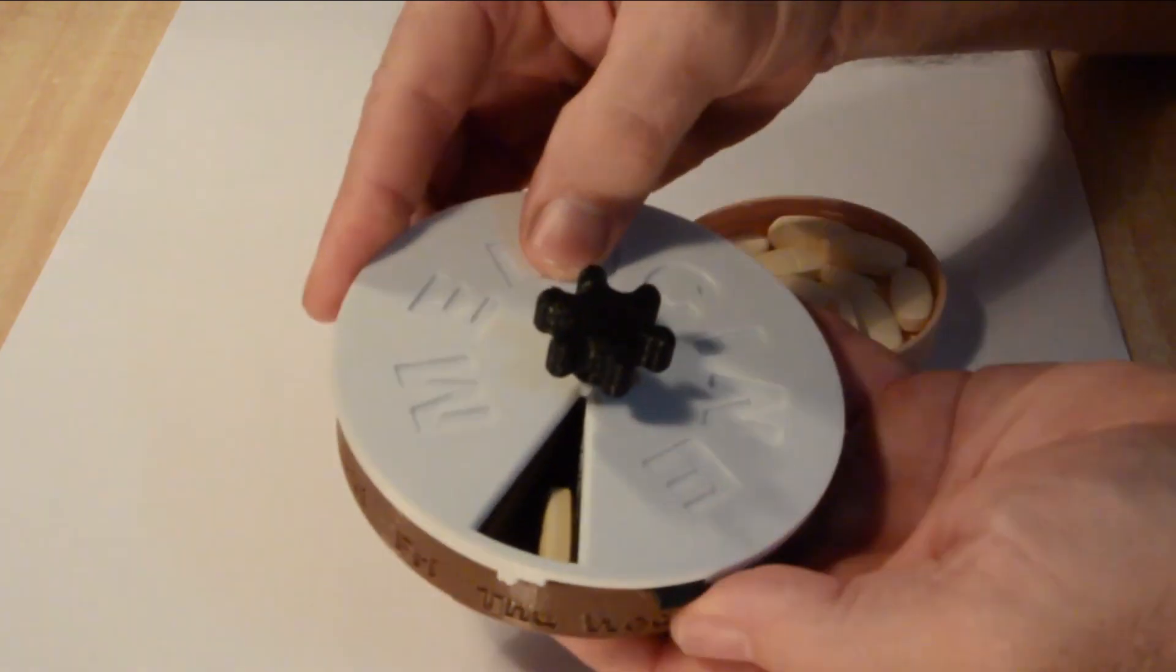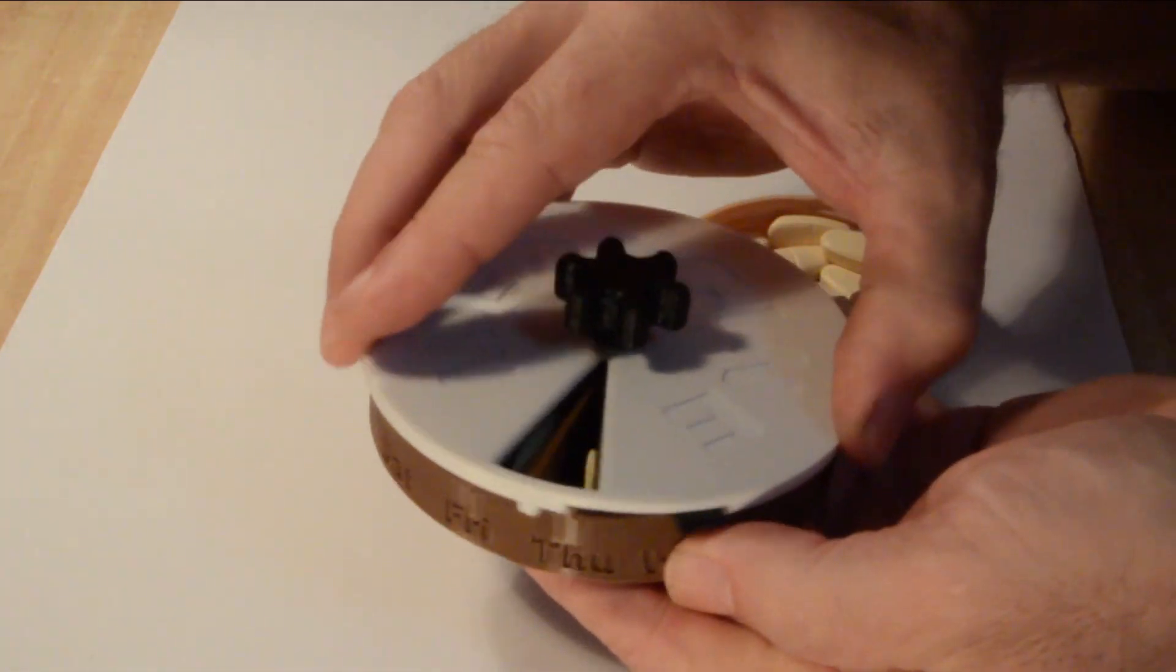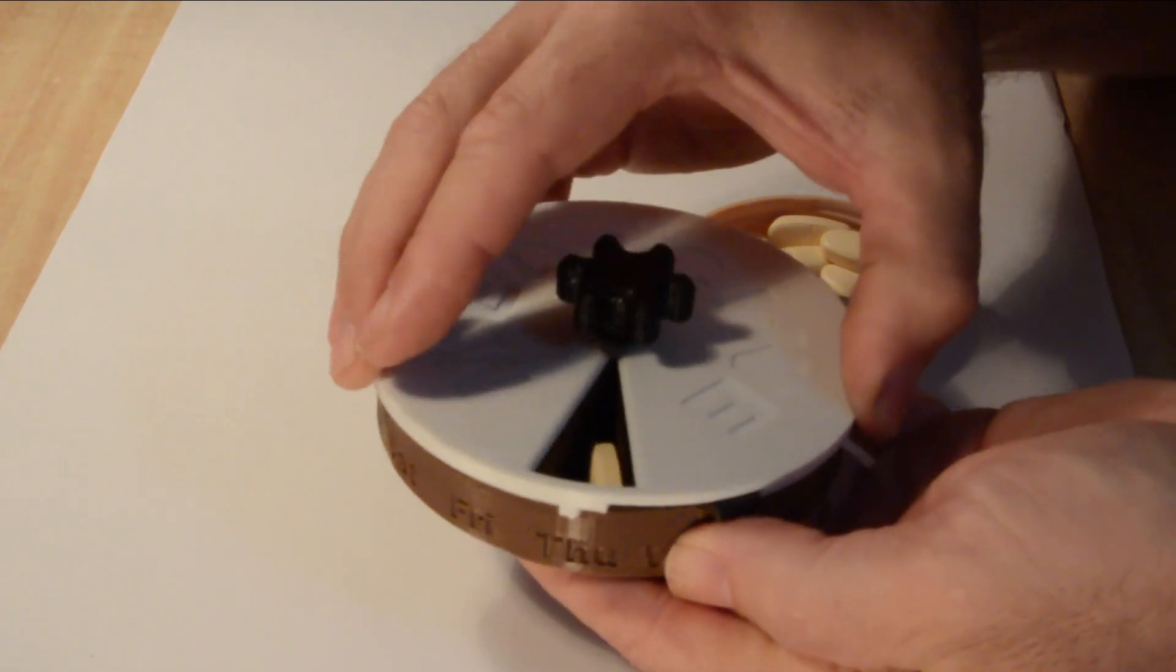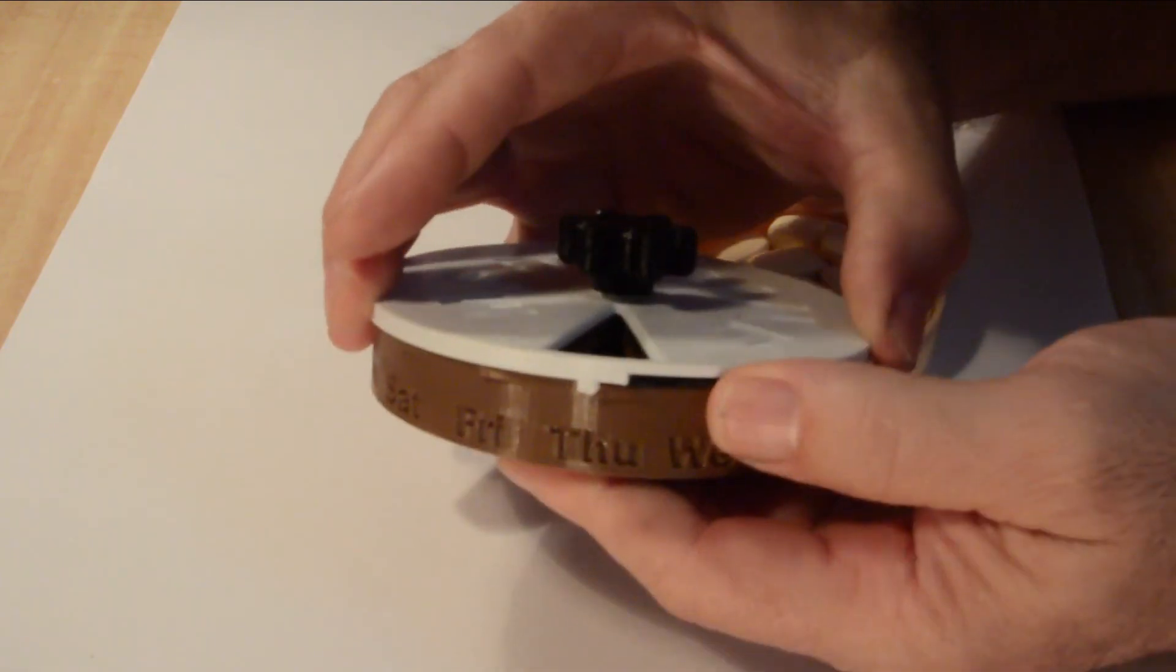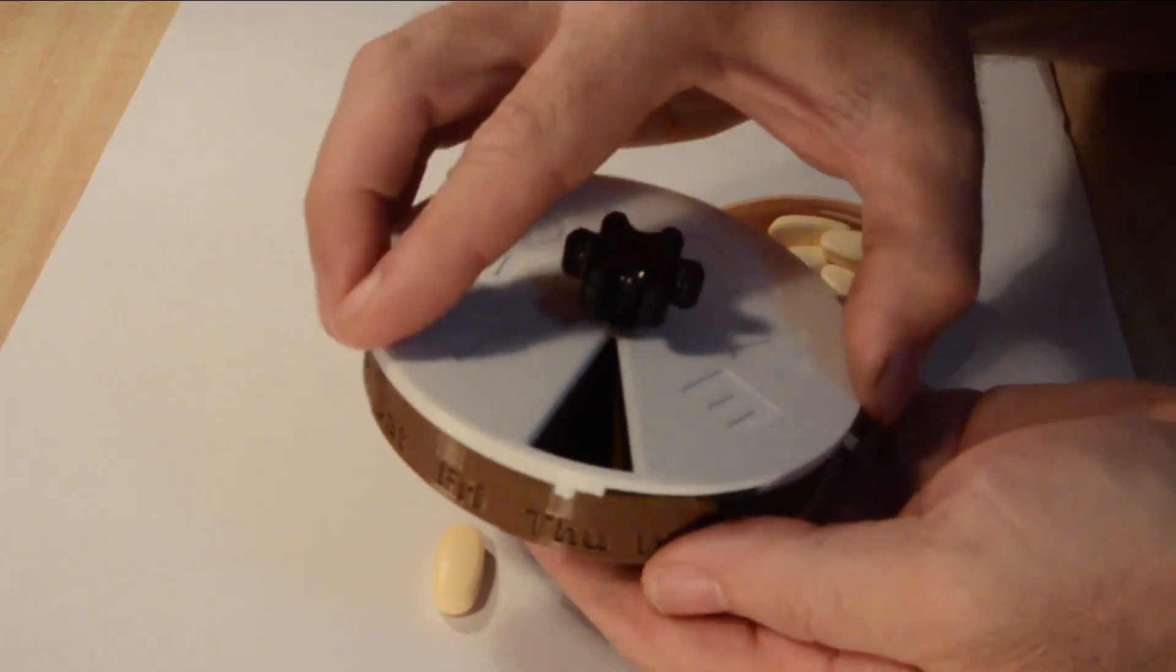You then simply rotate the lid to the next day marker, and with the auto locking latch, the lid cannot be rotated backwards. So if the dispenser has tablets present for the indicated day, you know definitely that they need to be taken.